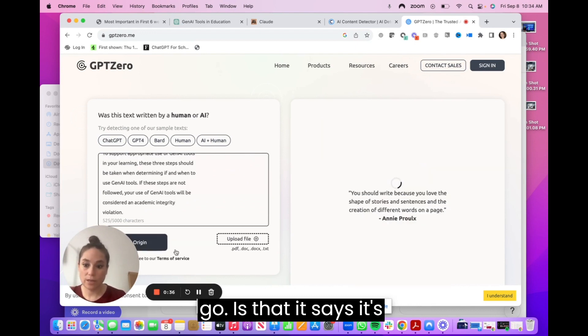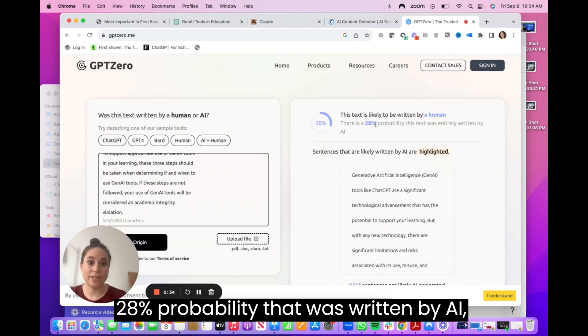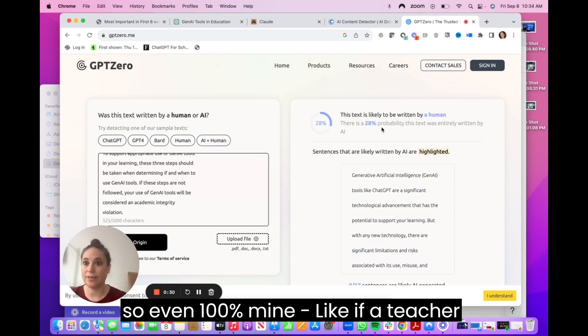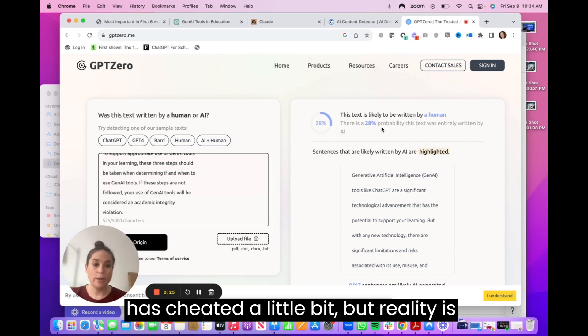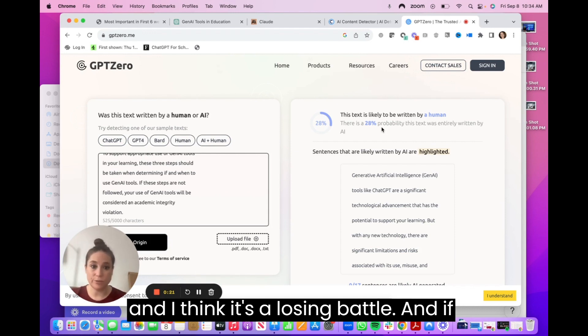It says a 28% probability that was written by AI. So even 100% mine, like if a teacher sees that, or if you see that, you could actually think well maybe my students cheated a little bit. But reality is just not very like it doesn't work. And I think it's a losing battle.